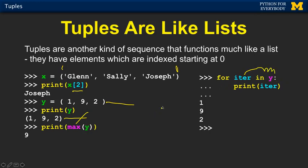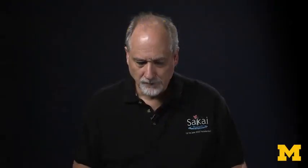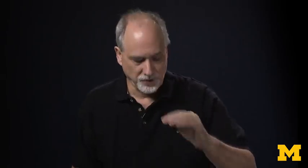And so in a way these are the same. Now there are differences. The place where there are differences is that tuples are not changeable — they're immutable. And if you recall, strings are also not mutable.